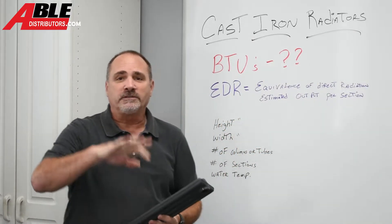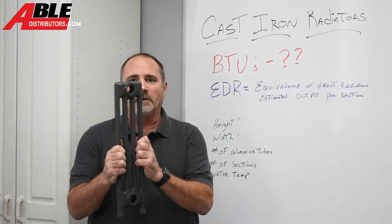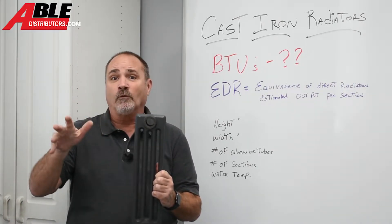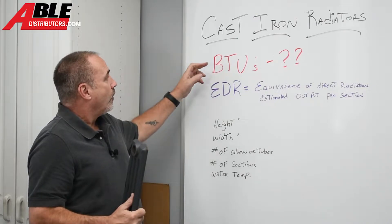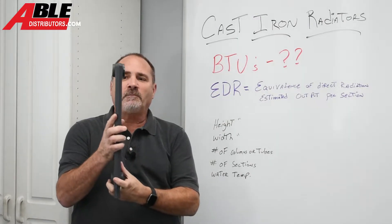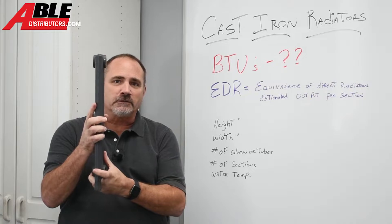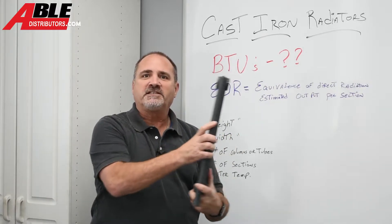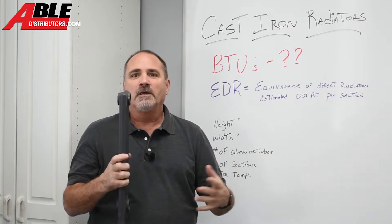Baseboard is easy to figure out — that's covered in another chart — but today we're going to be talking about cast iron radiators, steam or water. To find the BTUs, you get the BTUs of each section and then, however many sections you have in that radiator, you add them up.